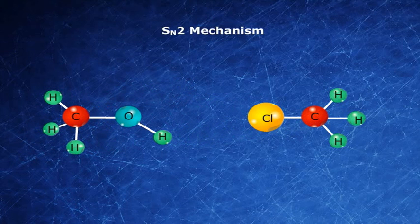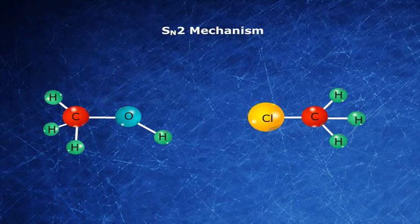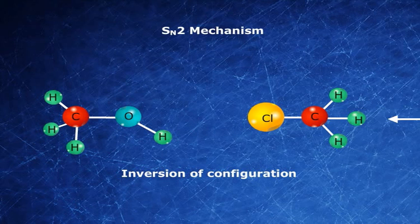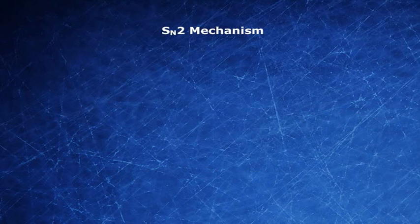Now let's see how the SN2 mechanism proceeds. Before we discuss the mechanism, we first need the reactants: an alkyl halide and a nucleophile. Let us take chloromethane and hydroxide ion as the reactants.